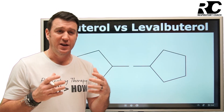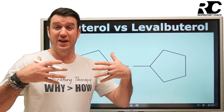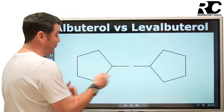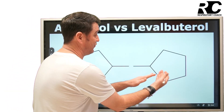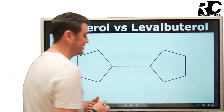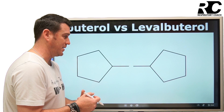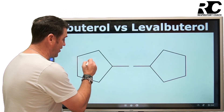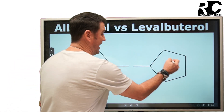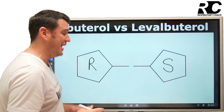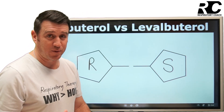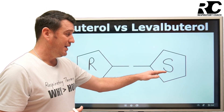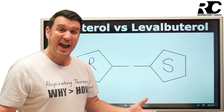An isomer is basically a chemical compound and a mirror of that — it's the exact same mirror. So we have one isomer here, and in a mirrored reflection is the second isomer. What we know is that albuterol has an R and an S isomer. This is what you want to remember: the S isomer is basically inactive.